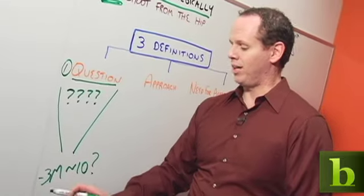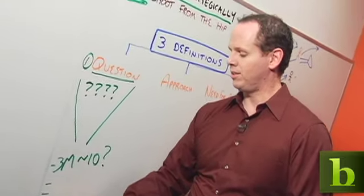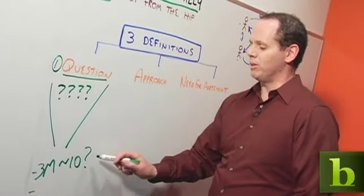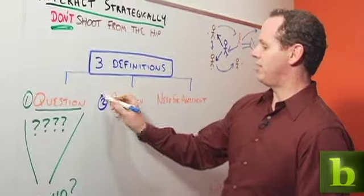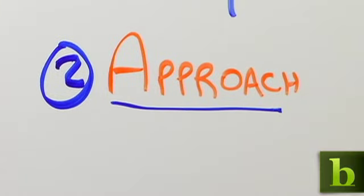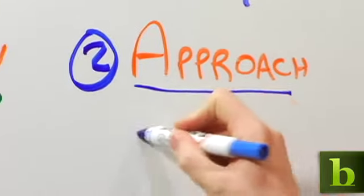You may have others too, like what's the scope, when is it due, etc. Once you have your well defined question, it's not time to go start asking yet. The second definition you need is the definition of your approach. There are three parts to your approach. The first is who.